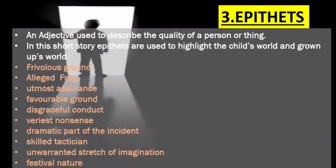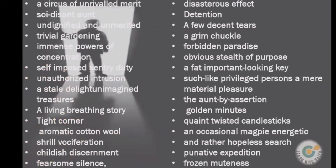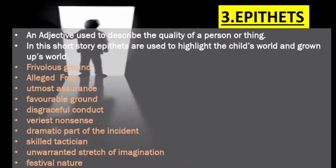Now look at epithets. Don't think you have to remember all these things — just understand that epithets are given here. An adjective used to describe the quality of a person or thing is called an epithet. In this short story, epithets are used to highlight the child's world and the grown-ups' world. The whole story becomes more alive and more interesting because of these epithets. The writer uses epithets to highlight the children's world and also the adults' world.